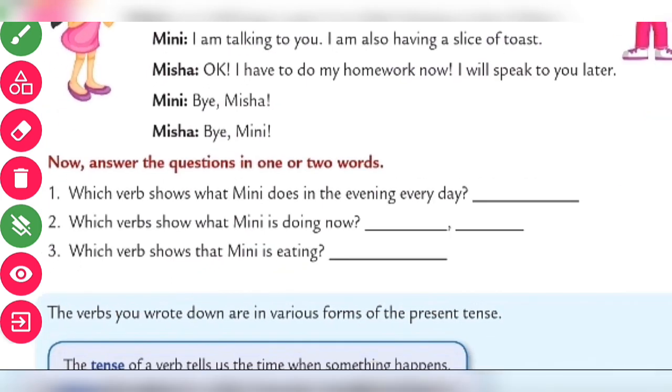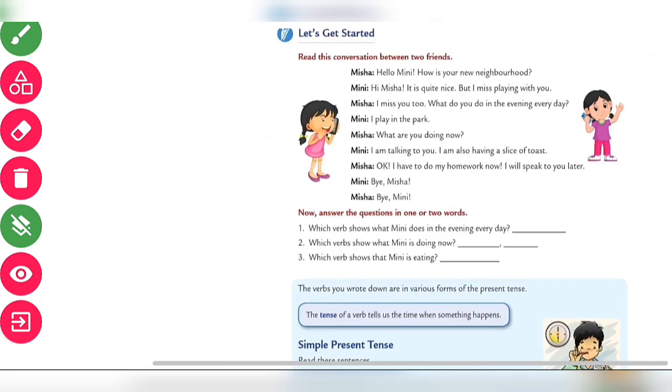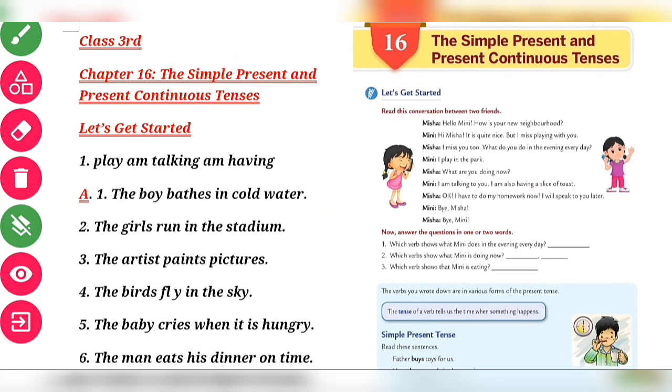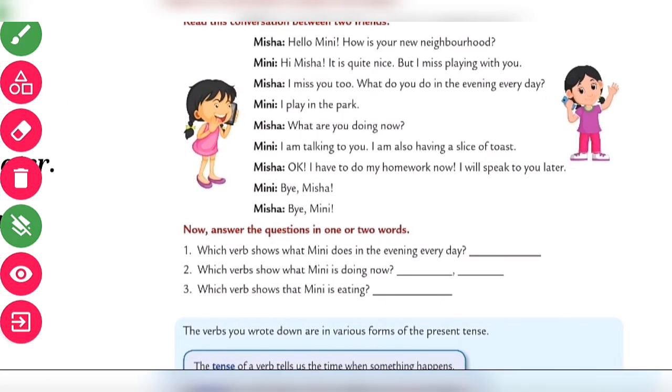After the conversation, now answer the questions in one or two words. Which verb shows what Mini does in the evening? Which verb shows what Mini is doing now? And which verb shows that Mini is eating? First of all, what does Mini do every day? Let's see the conversation.